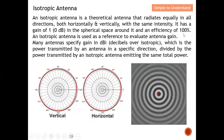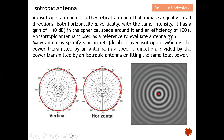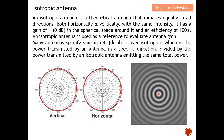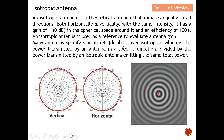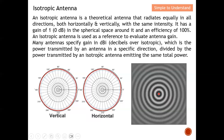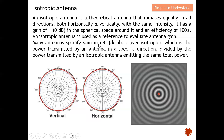An isotropic antenna has a gain of one, which is 0 dB, radiating equally in a sphere around it with an efficiency of 100%. It is used as a reference to evaluate antenna gain. Many antennas specify gain in dBi — decibels relative to isotropic — which is the power transmitted by an antenna in a specific direction divided by the power transmitted by an isotropic antenna emitting the same total power.